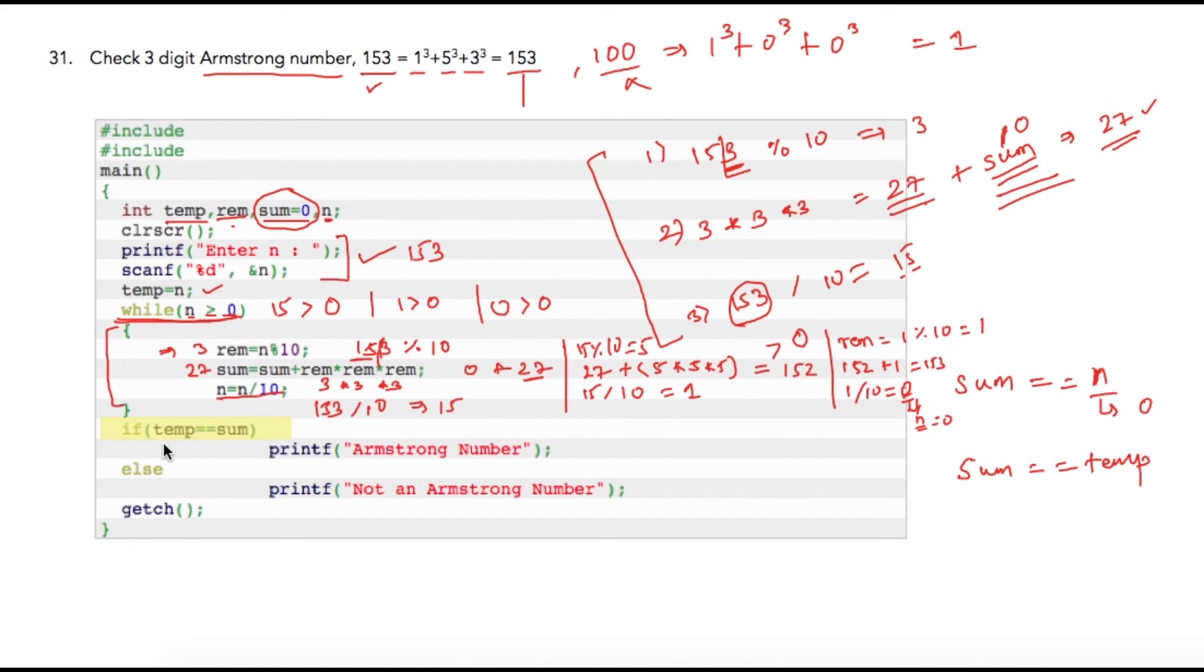If user has entered 100, then sum would be 1 which is a false condition, so compiler will print not an Armstrong number. I hope you understand this program, it is little complex to understand.